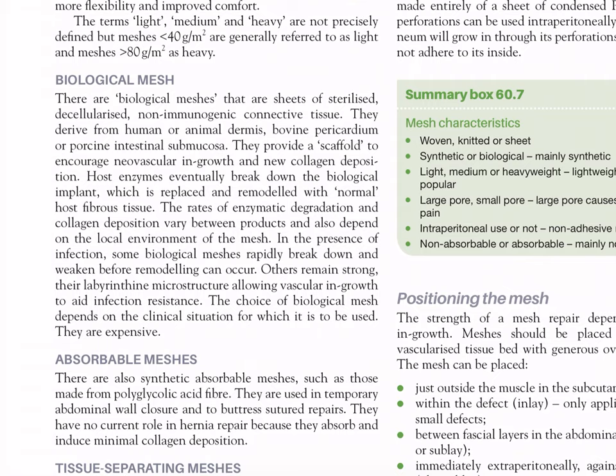Biological meshes are sheets of sterilized, decellularized, non-immunogenic connective tissue derived from human or animal dermis, bovine pericardium, or porcine intestinal submucosa. They provide a scaffold to encourage neovascular ingrowth and new collagen deposition. Host enzymes eventually break down the biological implant, which is replaced and remodeled with normal host fibrous tissue. The rates of enzymatic degradation and collagen deposition vary between products and depend on the local environment. In the presence of infection some biological meshes rapidly break down and weaken before remodeling can occur; others remain strong due to their labyrinthine microstructure allowing vascular ingrowth to aid infection resistance.